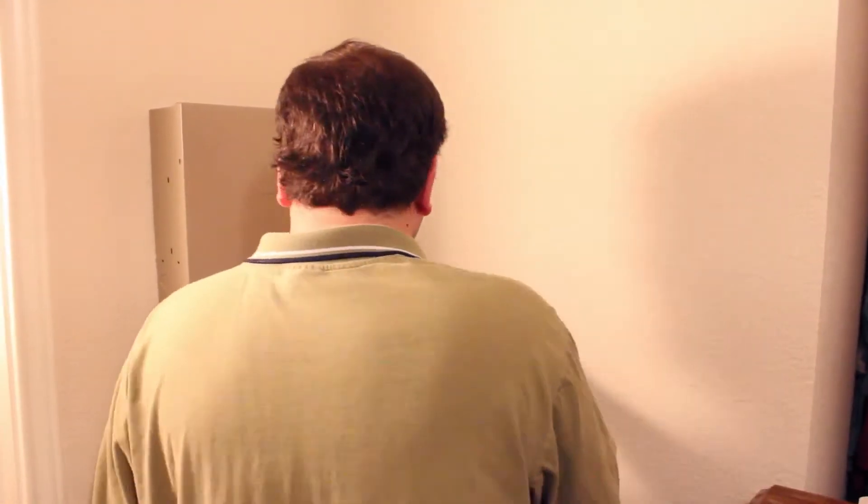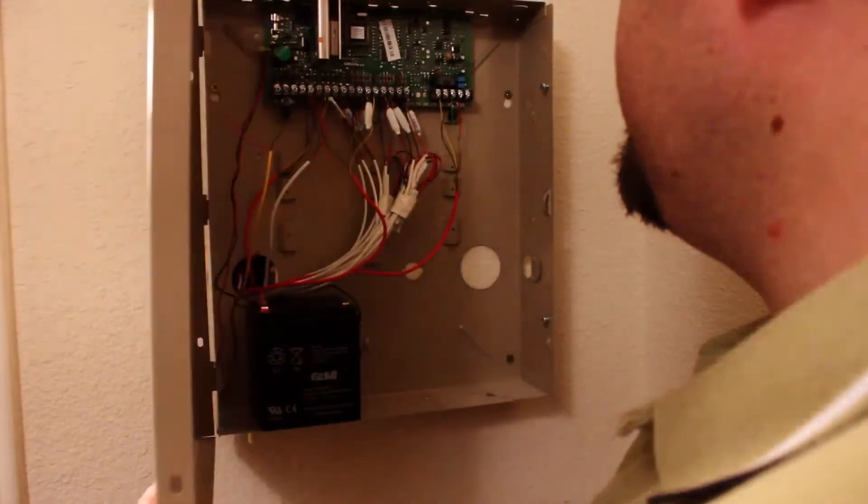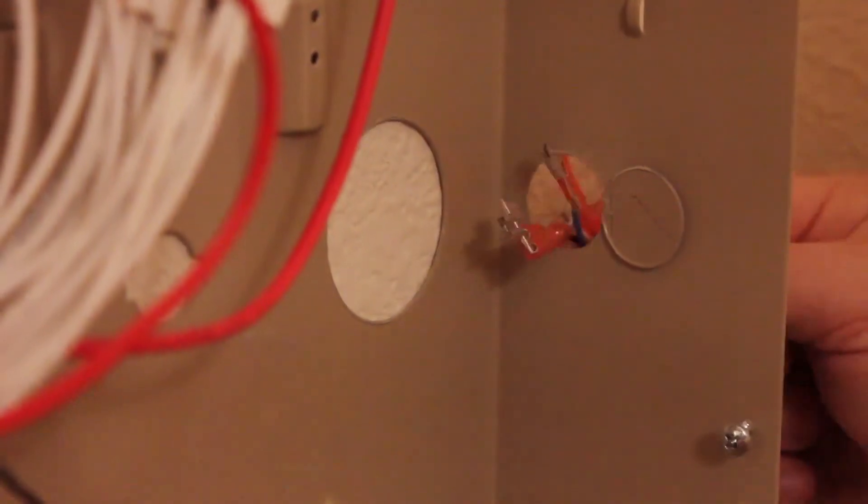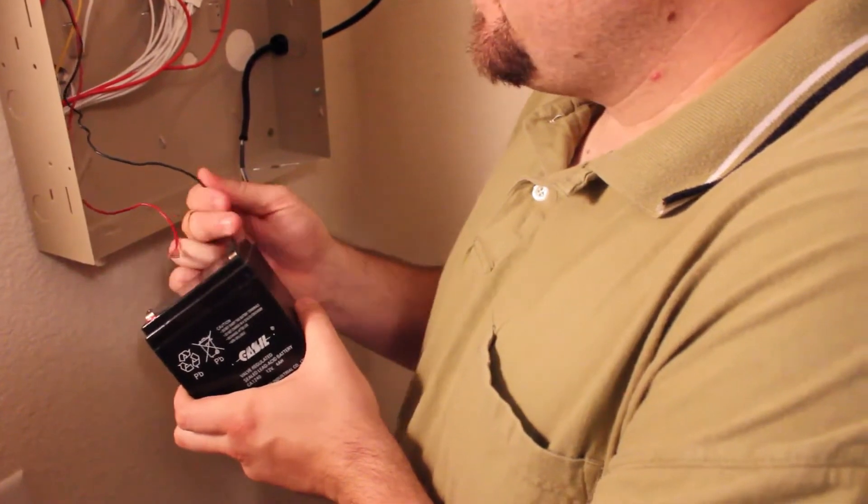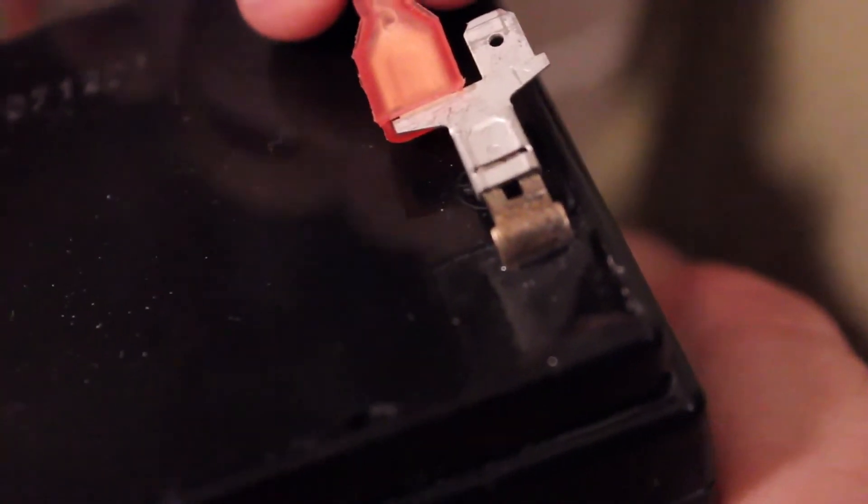Locate your alarm panel box. It will usually be in a closet or utility room. Snake the cable bundle into the control box. Remove the leads from your backup battery. Connect the power leads from the conversion device to the battery.